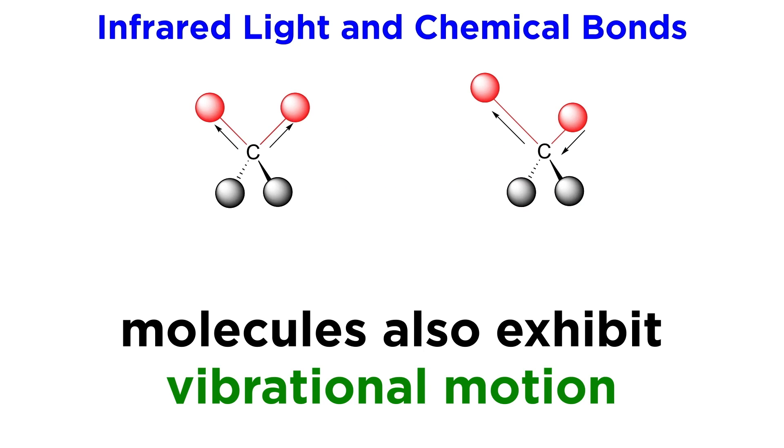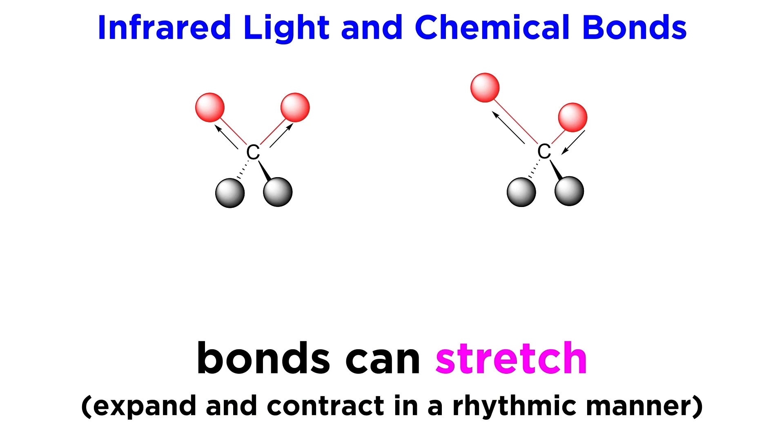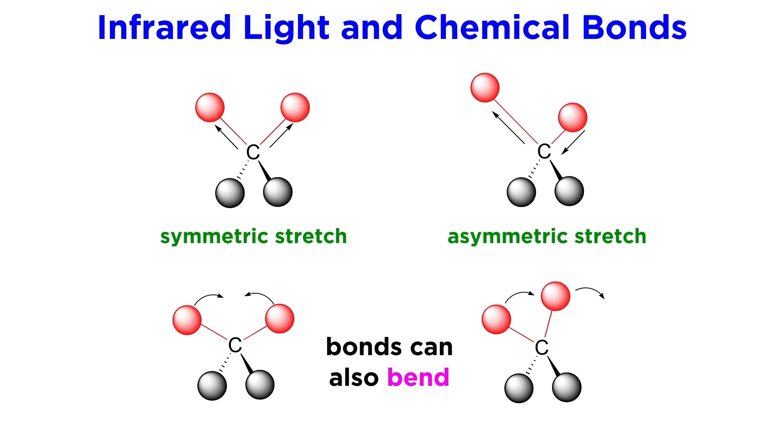But chemical bonds are also doing other things, as they can exhibit vibrational motion. Bonds can stretch, which means they can expand and contract slightly. This can be done in a symmetric way with respect to a central atom, which looks like this, or in asymmetric fashion. We call this symmetric stretch and asymmetric stretch. We can also get bending, where atoms will twist a bit to expand and contract the bond angles. Again, this can be done in symmetric or asymmetric fashion, to produce what we call symmetric bend and asymmetric bend.